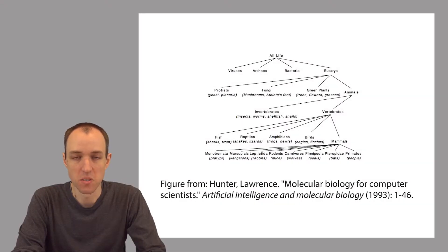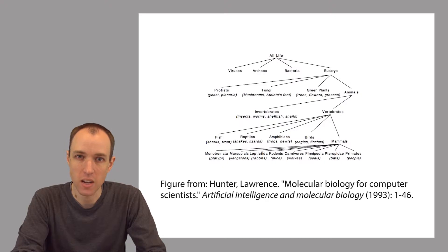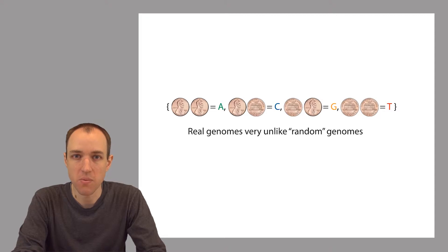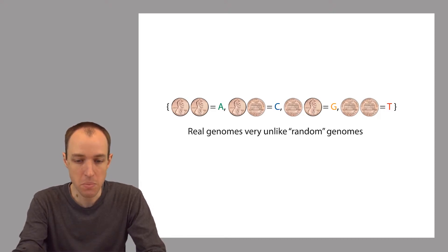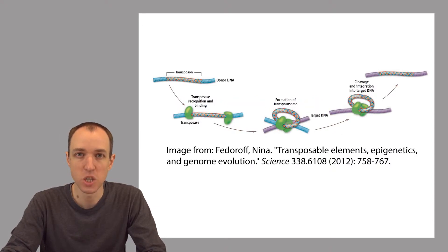A human genome sequence that we observe today is the end result of a pretty complex evolutionary process, and that process tends to introduce certain kinds of patterns into the genome — patterns that make the genome sequence very different from the kind of sequence you would get if you generated it randomly, like by flipping a coin or using a Python pseudorandom generator. Maybe the most striking example is that the human genome is extremely repetitive, far more repetitive than a random string would be.